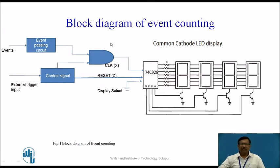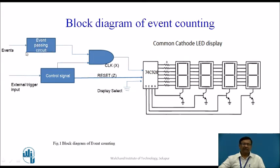Here, as usual, we have IC74C926 and its associated display circuit connected as shown. We require the clock input to be given to the IC74C926, and a reset to be given when counting is over. The display select is connected to ground so that we can display the data. The events are converted into an electrical signal, which is given to the event processing circuit. This circuit converts the input electrical signal into the appropriate digital signal required at the AND gate input.